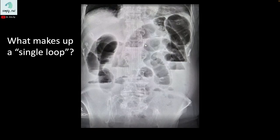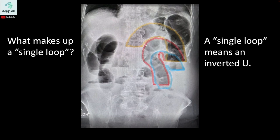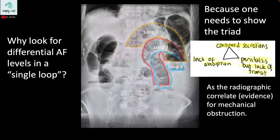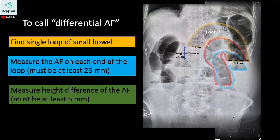A single loop means a single inverted U. Here I have outlined three loops, each comprising an inverted U — loop 1, loop 2, and loop 3. We look for differential air fluid levels within a single loop because we need to demonstrate the triad of continued secretion, lack of absorption, and peristalsis but lack of transit as the radiographic correlate for mechanical obstruction.